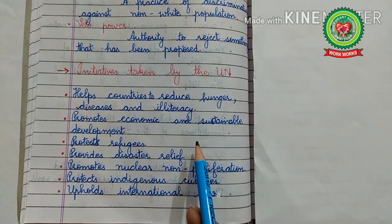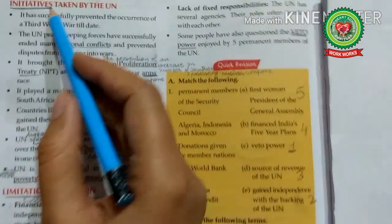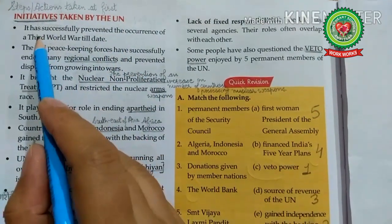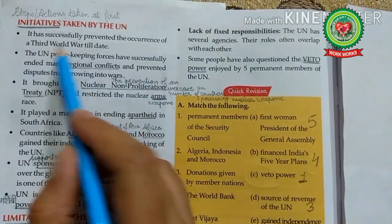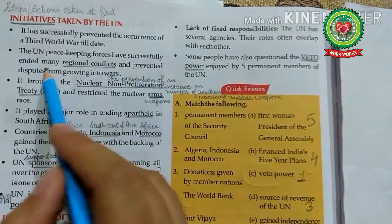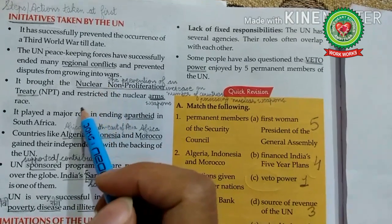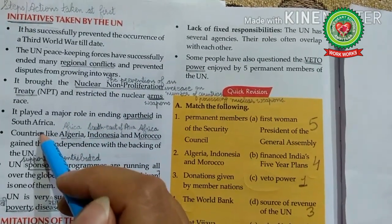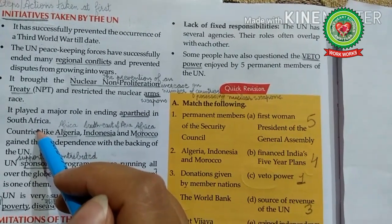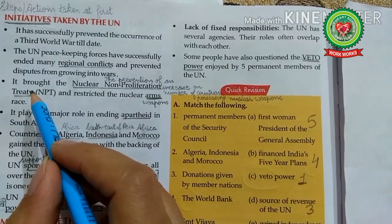Now let us read the initiatives taken by the UN from page 164 of the book. Number one: it has successfully prevented the occurrence of a Third World War till date. Second, the UN peacekeeping forces have successfully ended many regional conflicts and prevented disputes from growing into wars — for example, the United Nations forced France and Britain to withdraw their troops when they attacked Egypt in 1956 on the issue of the Suez Canal.